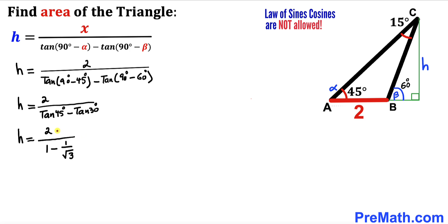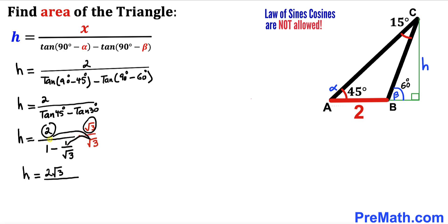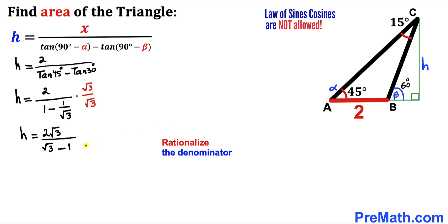Multiplying the numerator and denominator by square root of 3, h becomes 2 times square root of 3 divided by (square root of 3 minus 1).